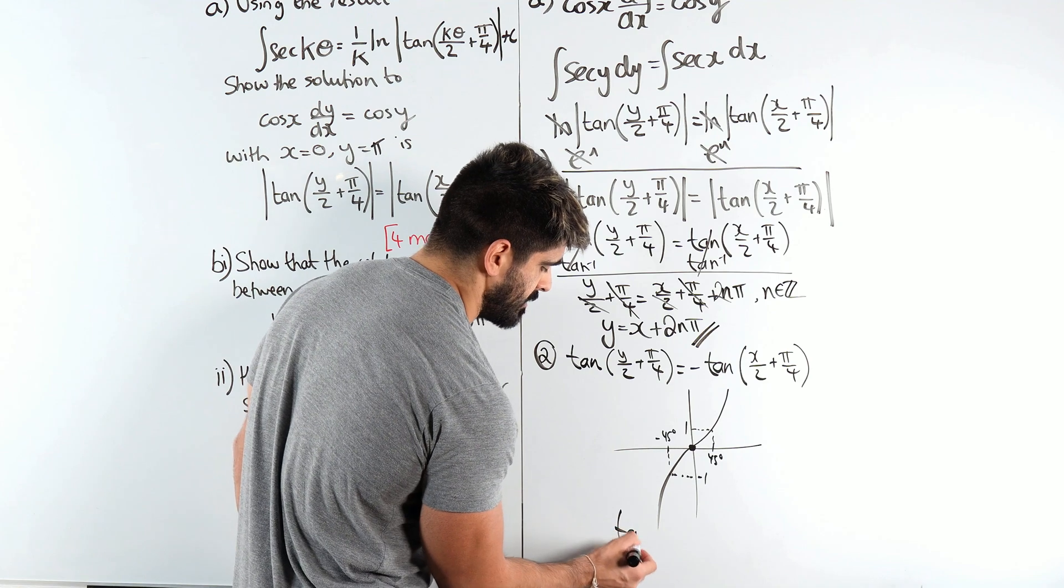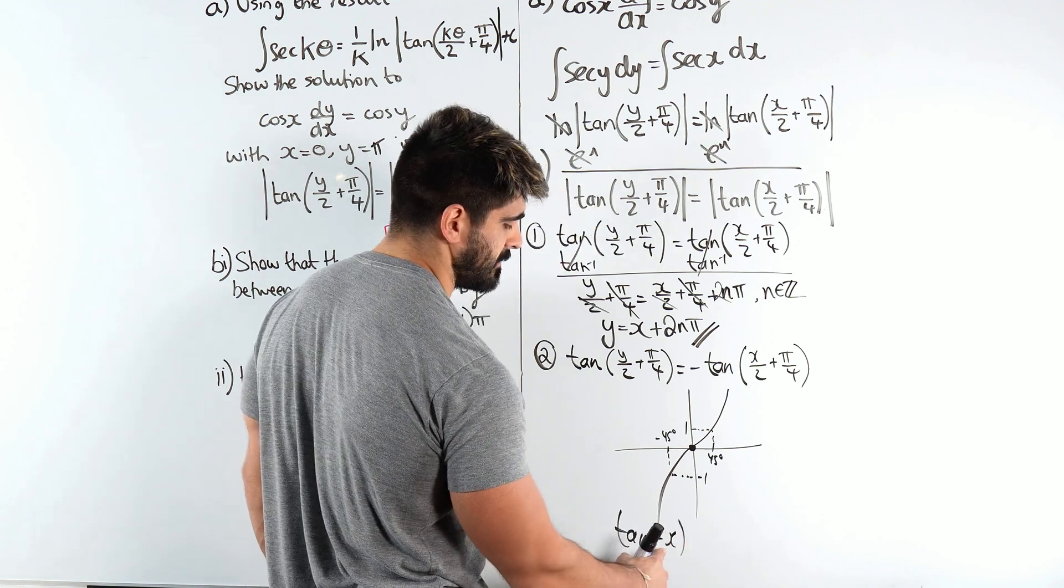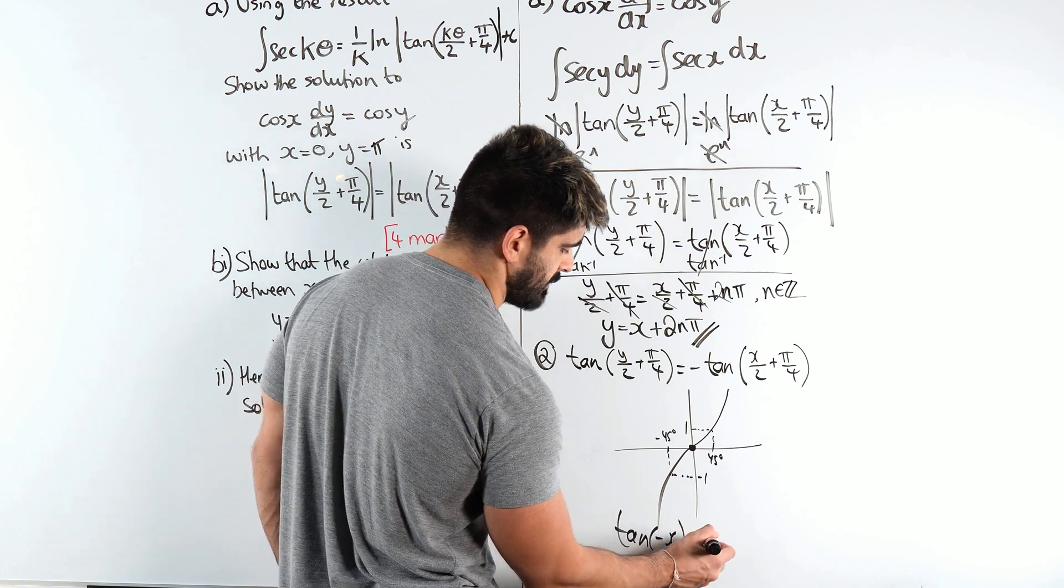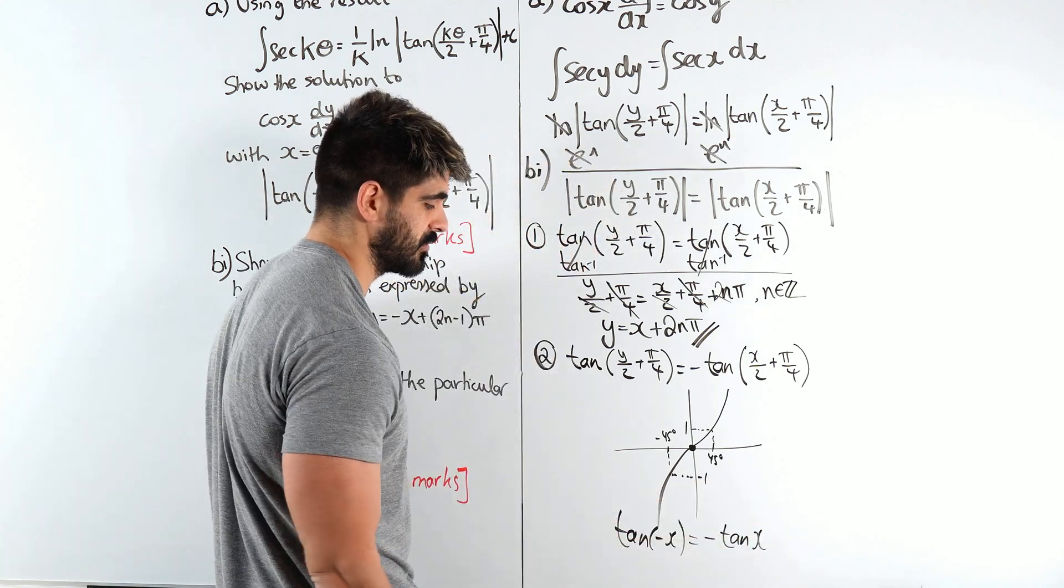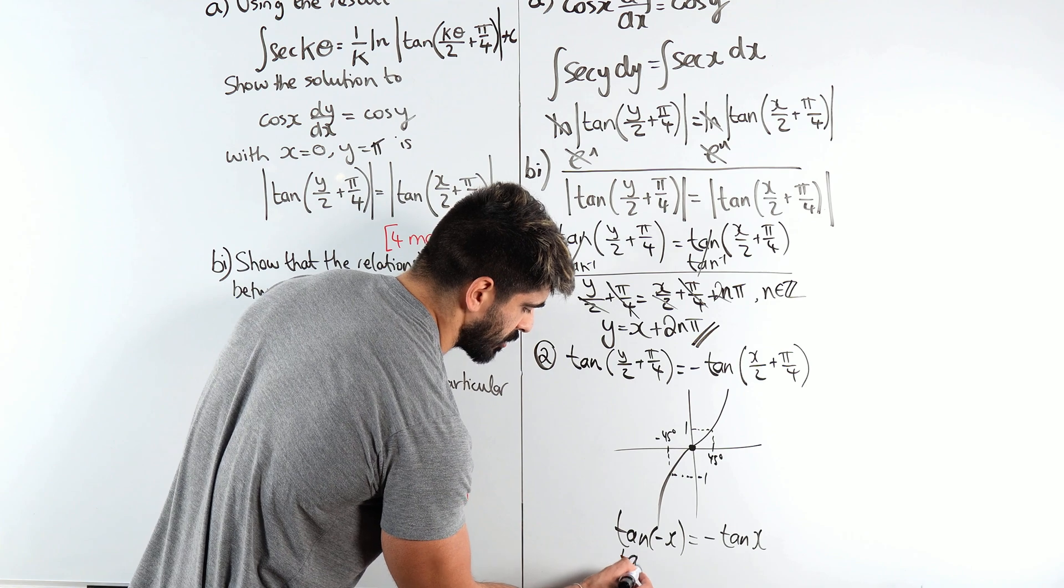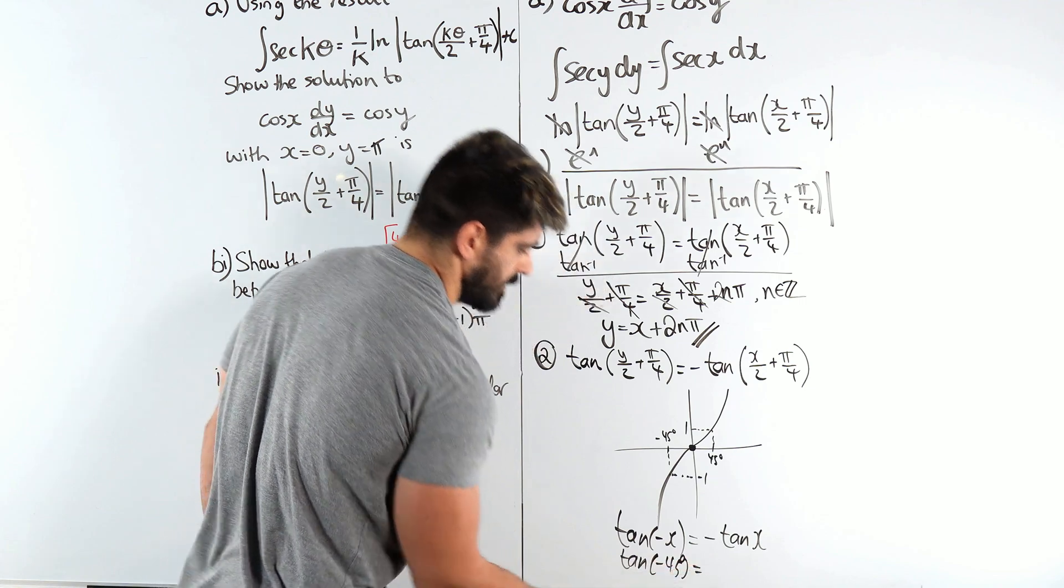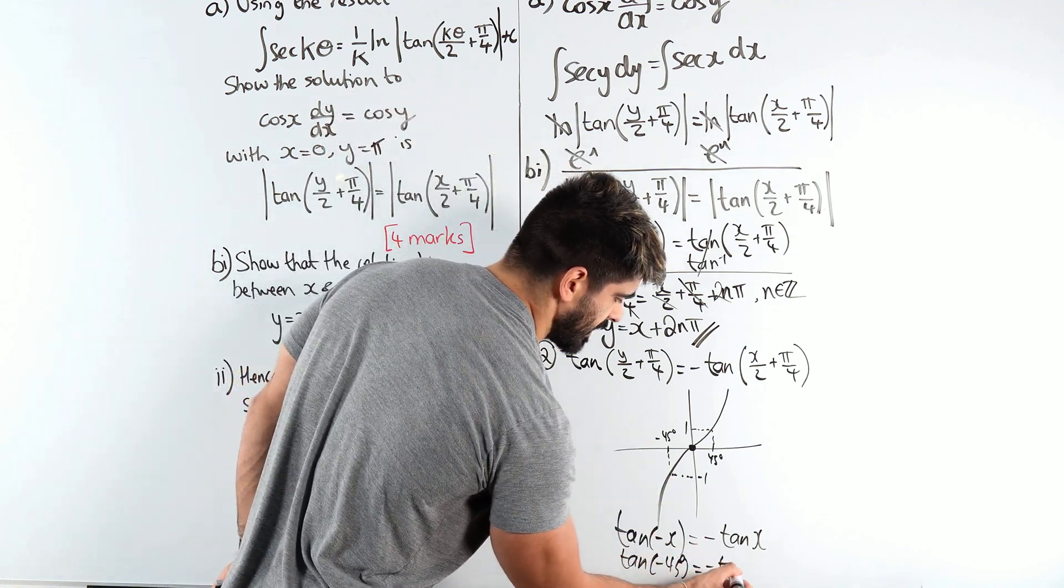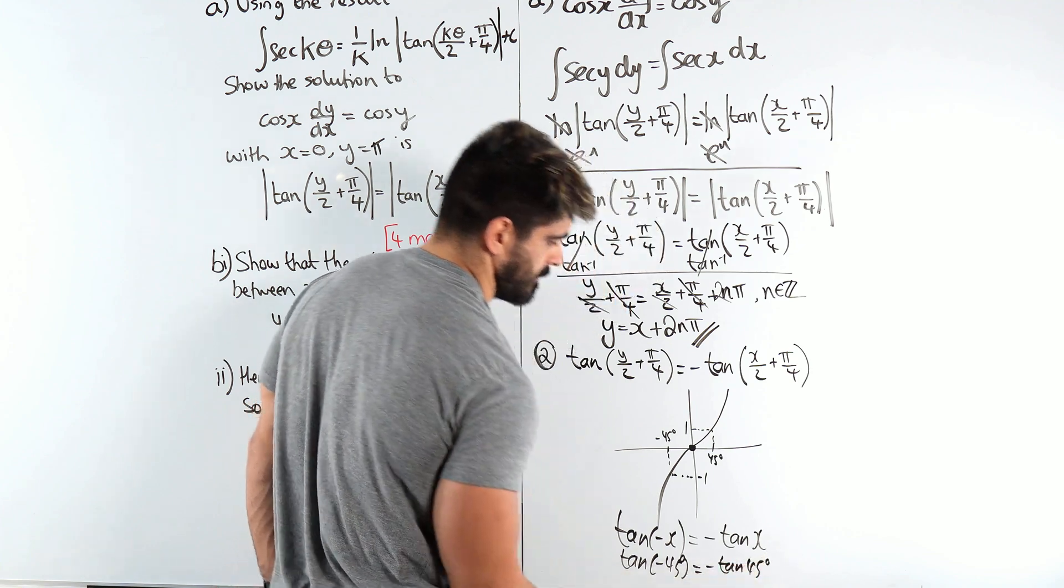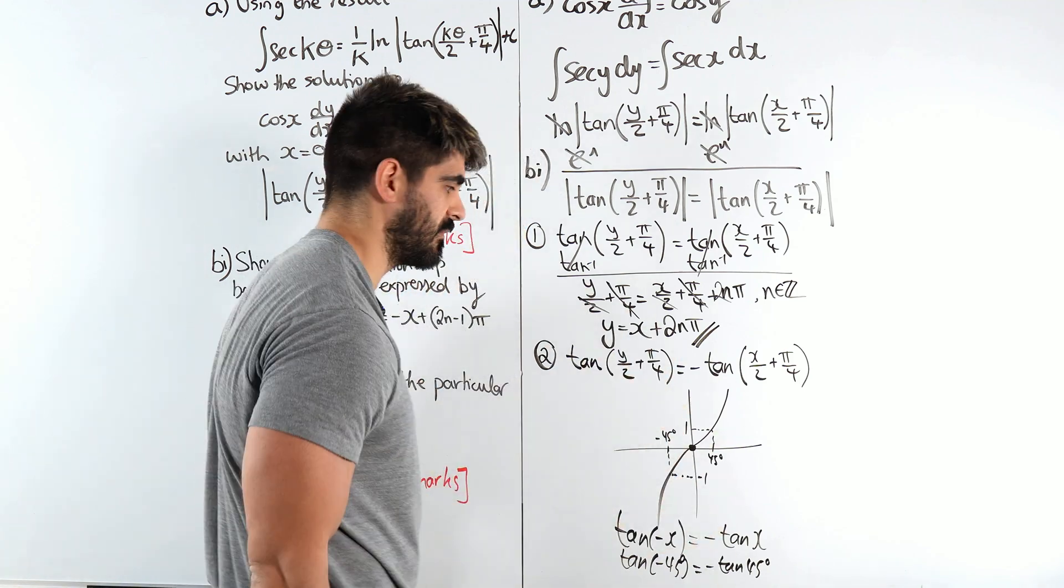Now what does that mean? It means if you have tan of negative x, so tan of some negative angle, it's just the same as doing the negative of the positive angle. For example, like the graph, tan of minus 45 degrees, tan of this is minus 1, right? That's just the negative of tan of 45. 45 is 1, you just do the negative of that. That shows that rotation of 180 degrees.